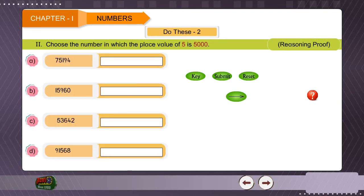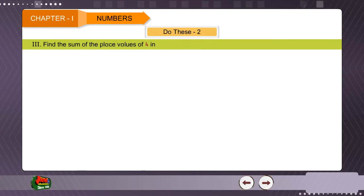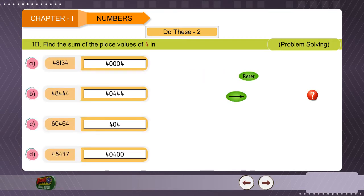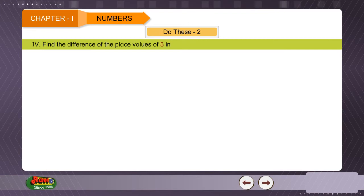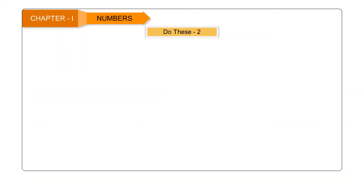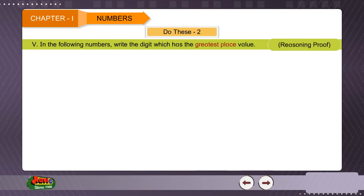Three: Find the sum of the place values of 4 in the given numbers. Four: Find the difference of the place values of 3 in the given numbers. Five: In the following numbers, write the digit which has the greatest place value.